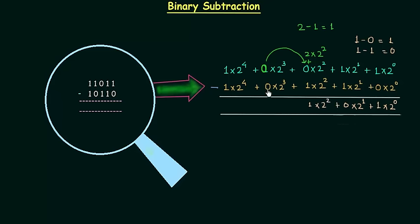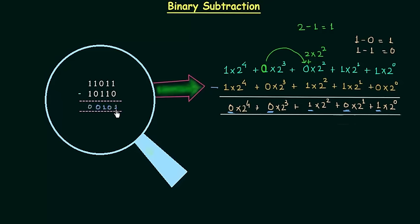0 minus 0 is 0, and 1 minus 1 is also 0. So this is our answer, and if we write down only the coefficients we have 0, 0, 1, 0, 1. So the answer is 00101.